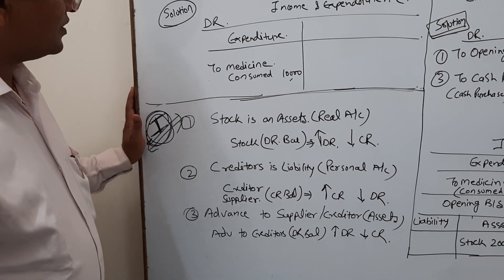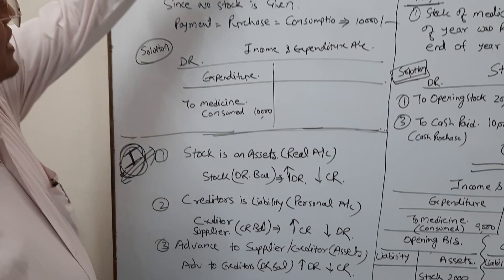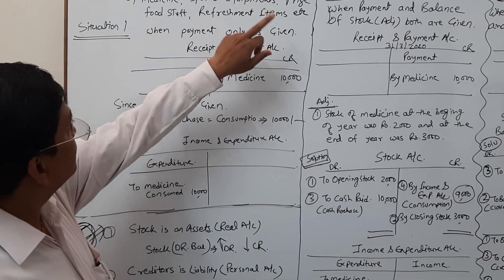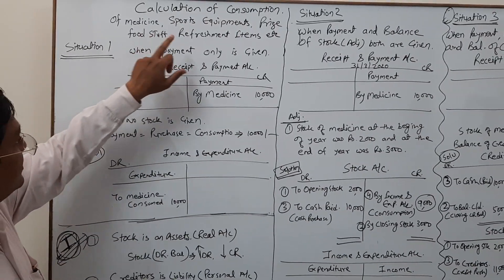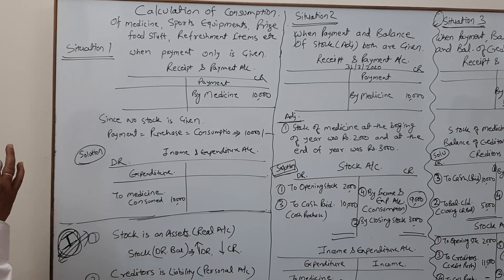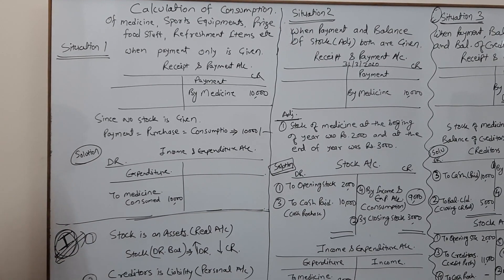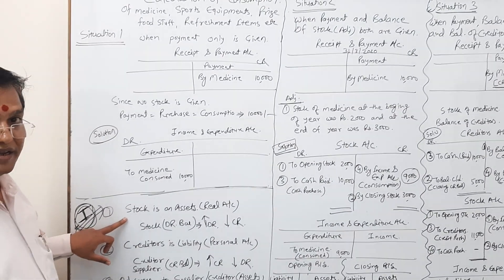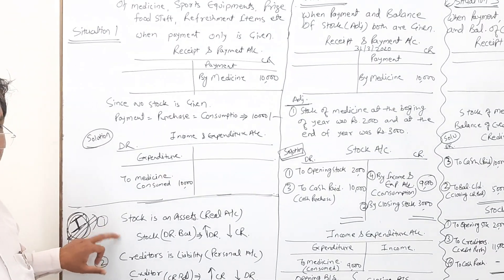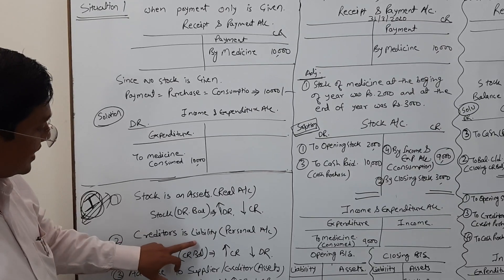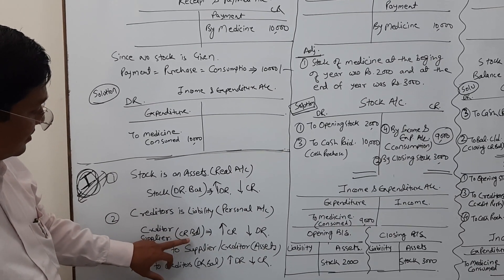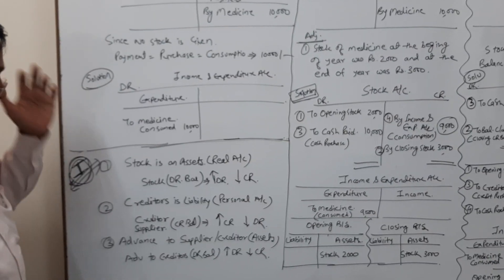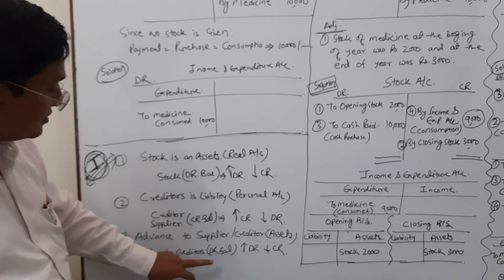To recap: we discussed calculation of consumption — consumption of medicine, sports equipment, price, food stuff, and refreshment items. The three basic concepts are: stock is an asset (real account, debit balance); creditors are a liability (credit balance); and advance to supplier is an asset (debit balance).